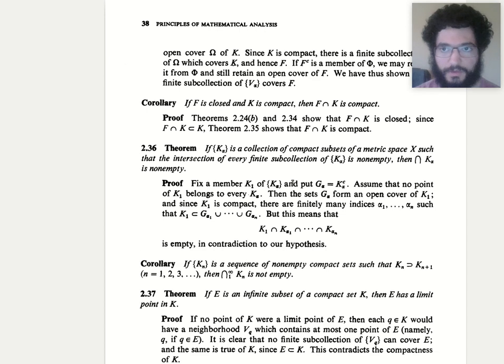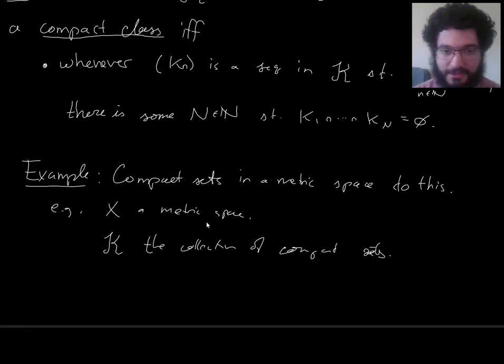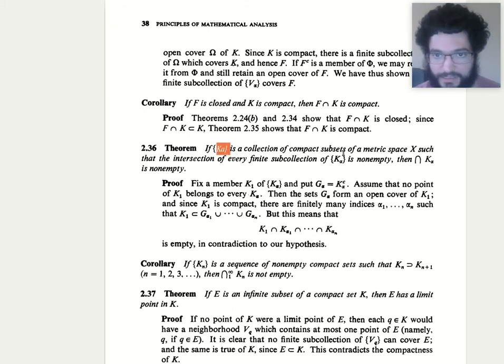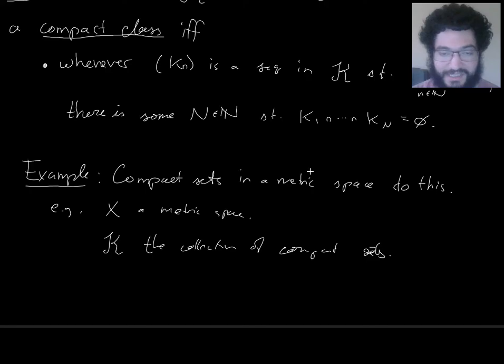By the way, if you're more familiar with baby Rudin, then on page 38 you see the same idea here. If you have a collection, and this is more general, this is about metric spaces, rather than being about just R, like in Abbott, but it's the same proof. Rudin doesn't require them to be nested, so this actually directly is telling you that the collection of compact sets in a metric space forms a compact class. The contrapositive of that statement is basically just saying the collection of compact sets is a compact class.